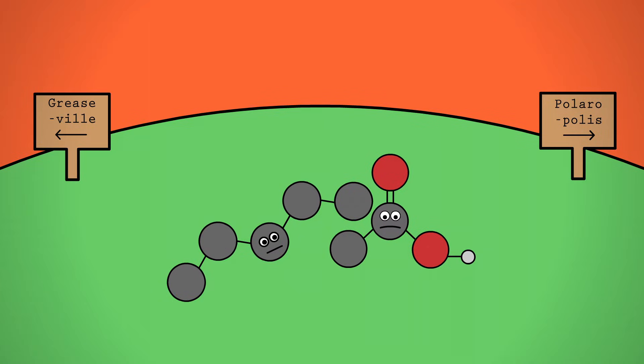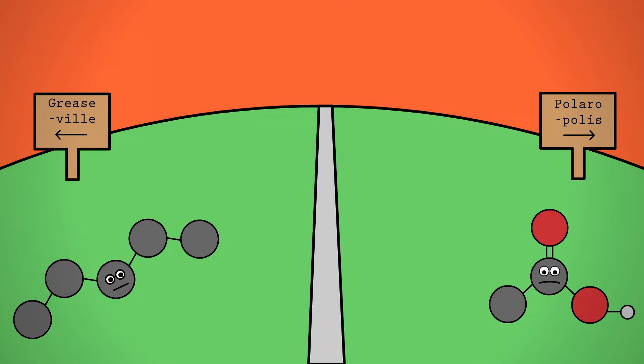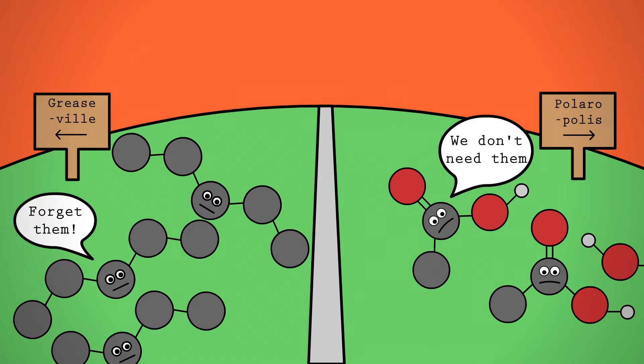One of the classic phrases in introductory chemistry is like dissolves like. Try to mix oil and vinegar and the two will just separate out. That's because it's favorable for polar substances to hang out with other polar substances while nonpolar ones hang out elsewhere.